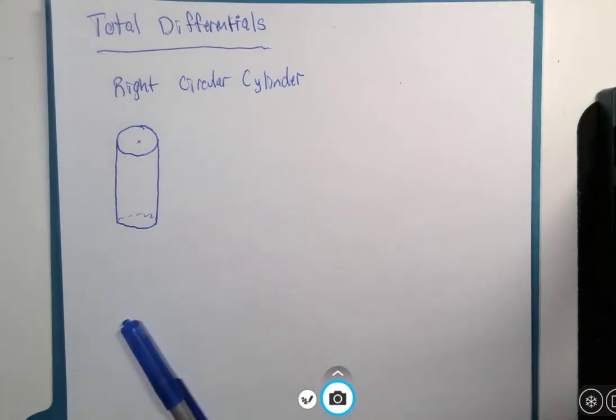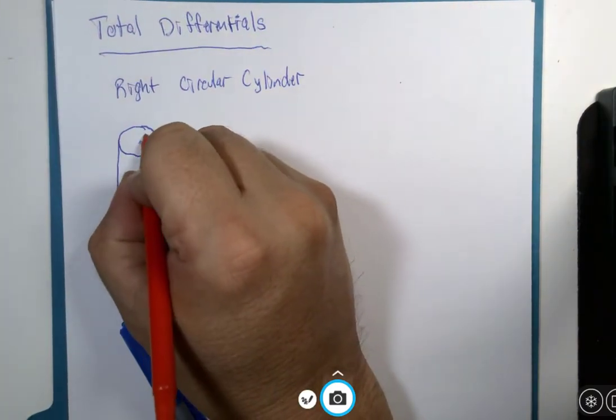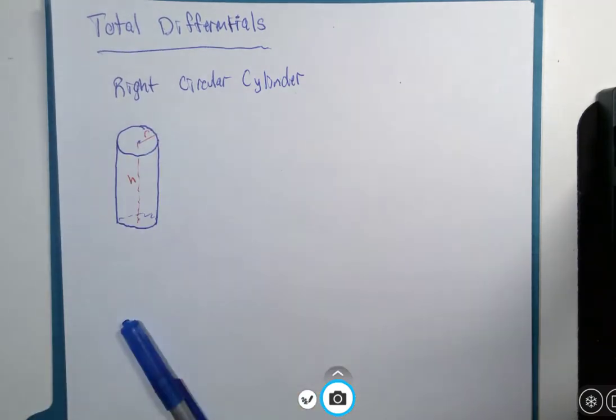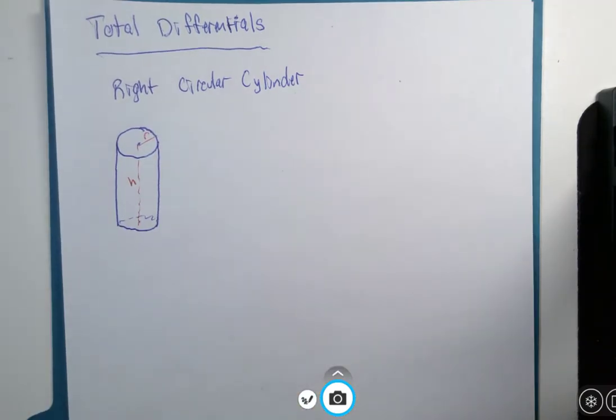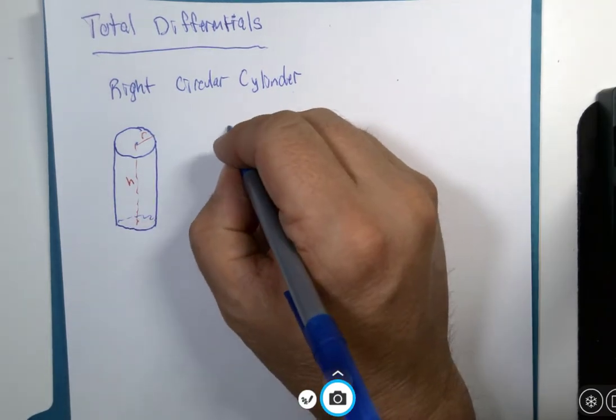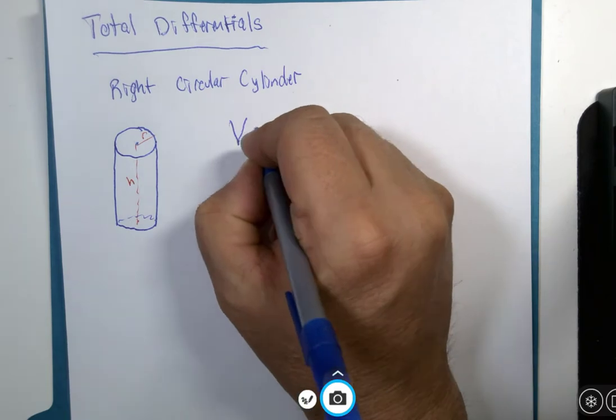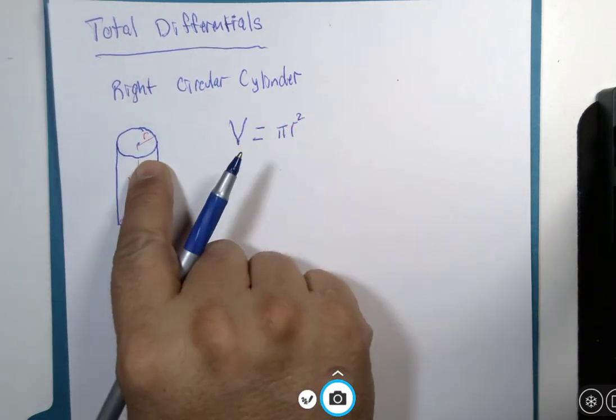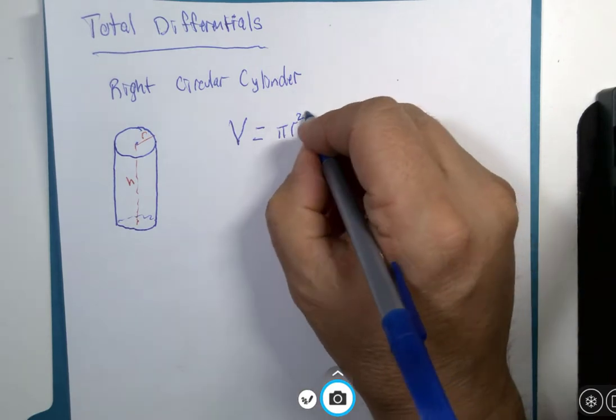Okay, so we've got ourselves a radius and a height. And we're going to have a question related to the volume here. So the volume of this cylinder is π times the radius of the circle squared multiplied by the height.